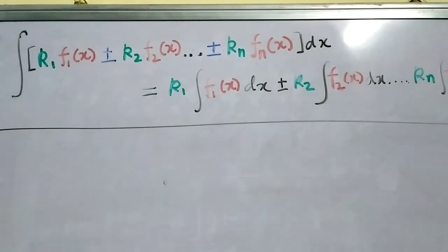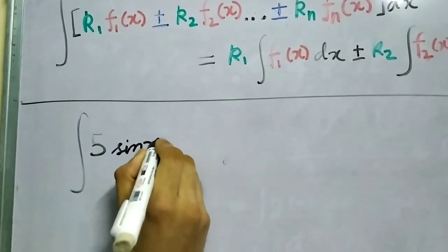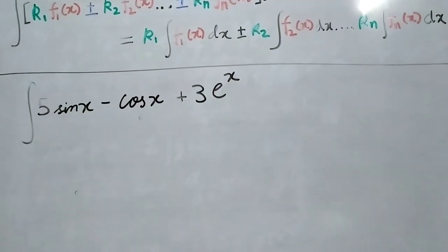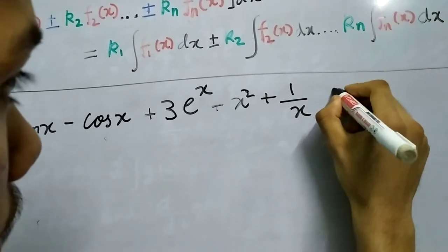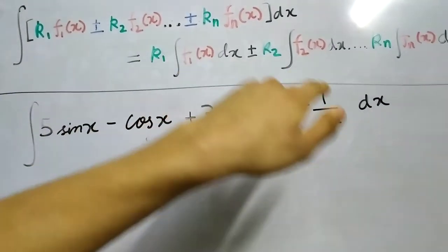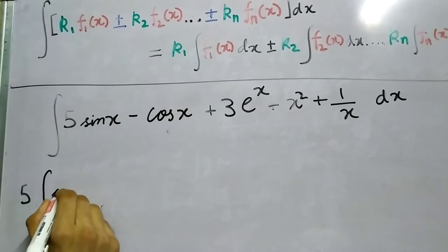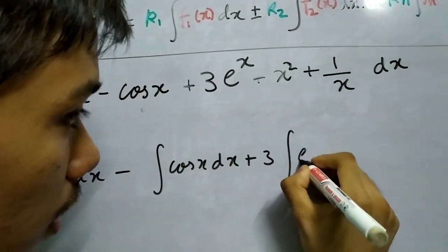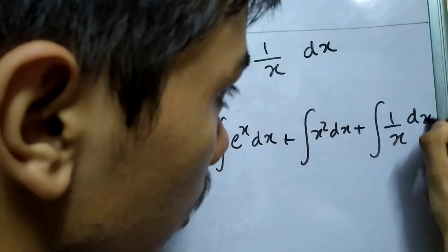Let us take an example. Say you want to integrate 5 sin(x) minus cos(x) plus 3 e to the power x, plus x squared, plus 1 by x dx. This might look very long, but you can split the integral into smaller integrals: 5 times the integral of sin(x) dx, minus the integral of cos(x) dx, plus 3 times the integral of e to the x dx, plus the integral of x squared dx, plus the integral of 1 by x dx.